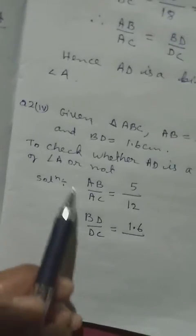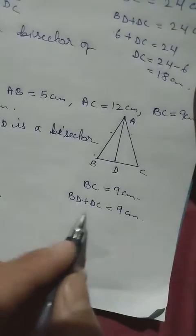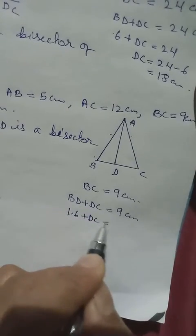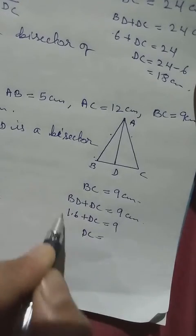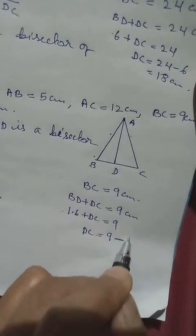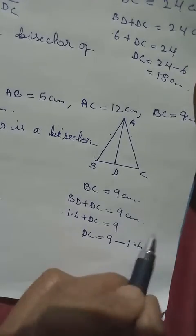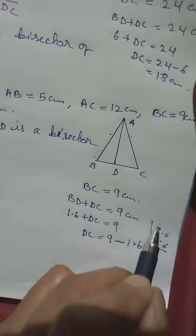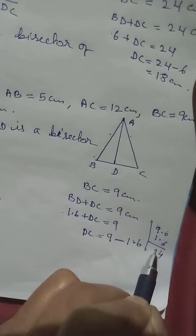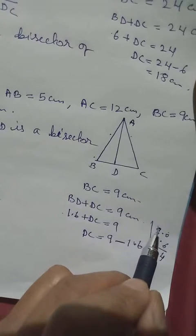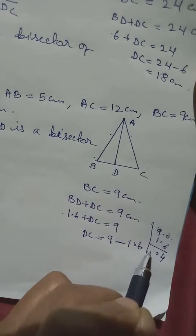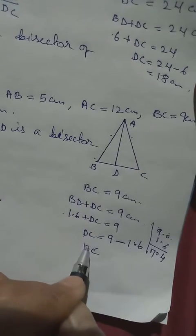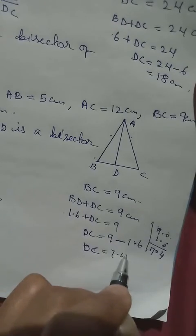Then we have BD equal to 1.6, we can find out easily DC. When this plus takes the side it becomes minus. 9 has no decimal so we can produce it as 9.0 minus 1.6. Then DC becomes 7.4. So that means DC we get it now equal to 7.4cm.